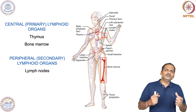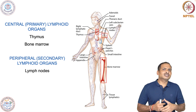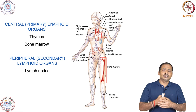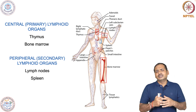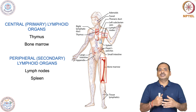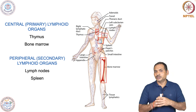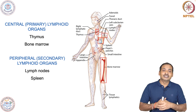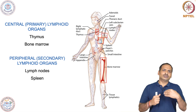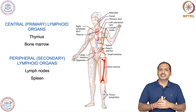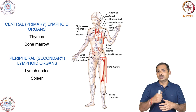The secondary lymphoid organs include the lymph nodes, which are scattered throughout our body. These are basically bean-shaped structures and play an extremely important role in the interaction of immunocompetent lymphocytes with antigen. Another very important secondary lymphoid organ is the spleen, which plays an important role in RBC maintenance — all old and defective RBCs are destroyed in the spleen — as well as playing an important role in the development of immunity.